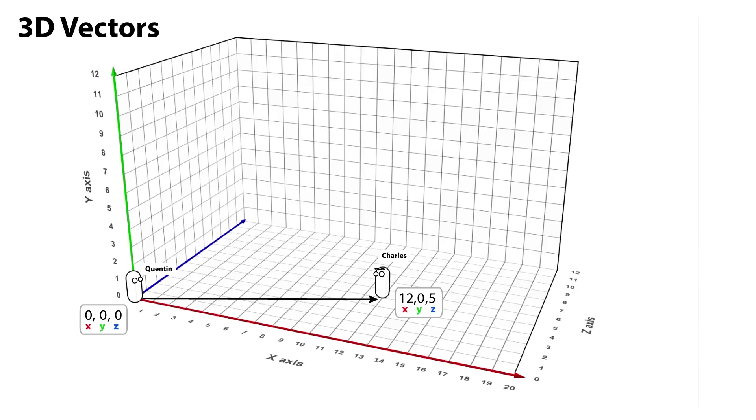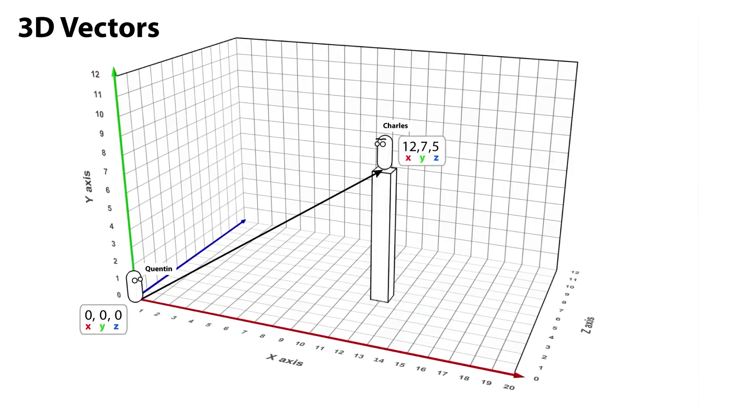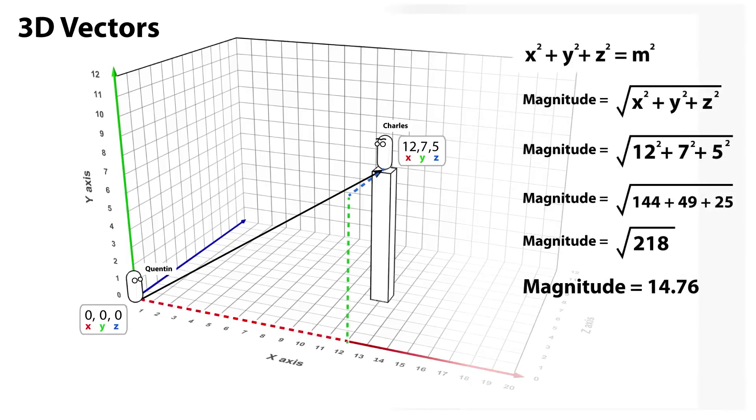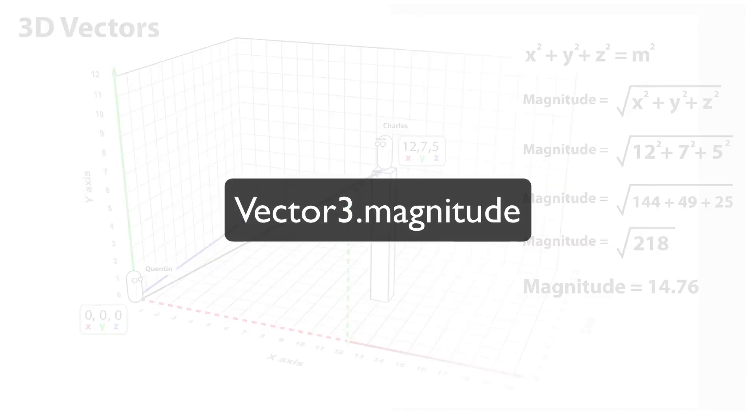To make things more three dimensional, we could imagine that Charles was on a higher vantage point. Now stood upon his seven units tall podium, Charles is at position 12, 7, 5. The calculation to find the magnitude of the vector between Charles and Quentin is the same as in 2D, but now features the z axis. Unity makes it easy to perform calculations like this with its helper function vector3.magnitude. See the documentation link below for more details.